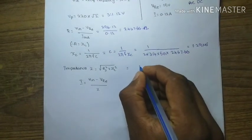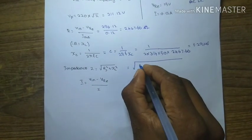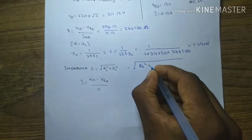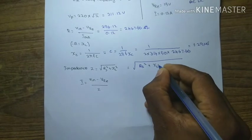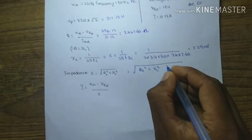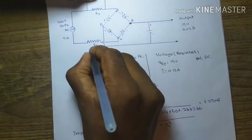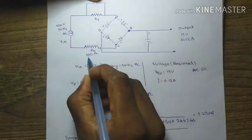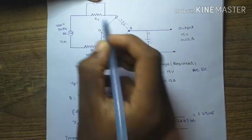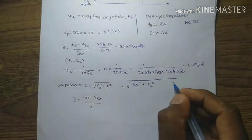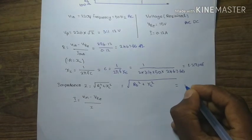We need the impedance, which equals the square root of resistance in series squared plus capacitance Xc squared. The resistance in series I am using is 100 ohm because of the high voltage of AC current.